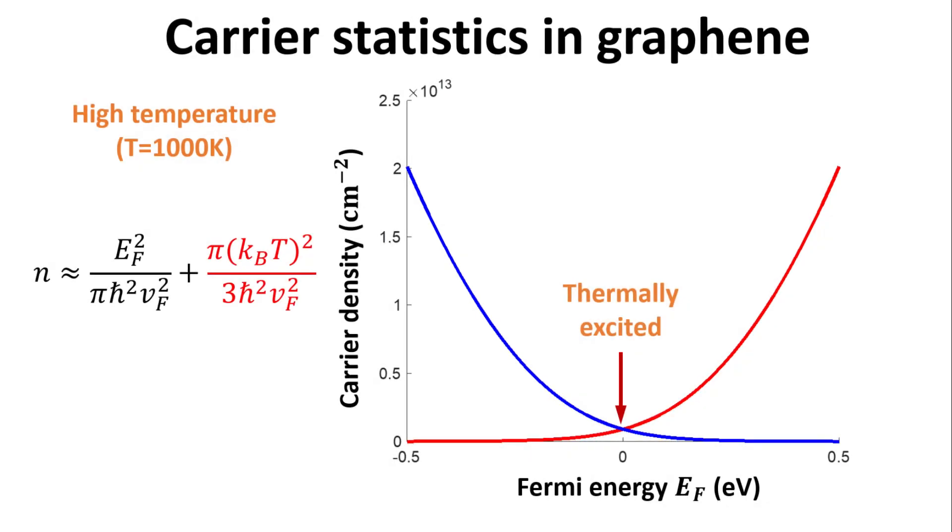These finite carrier densities are due to thermal smearing of the Fermi-Dirac distribution function. These thermally excited electron and hole densities can be estimated using the expression shown on the left, which can be derived from Sommerfeld expansion.